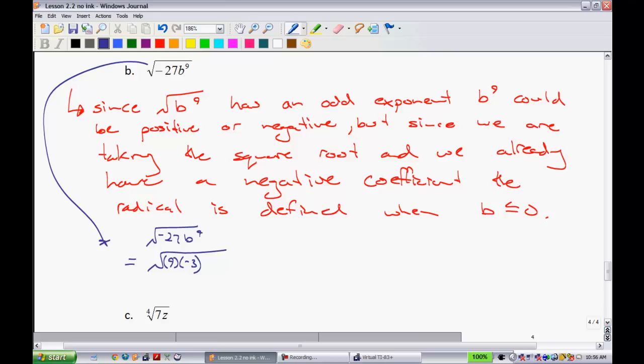since we are taking the square root of it, we need to make the b's have an even exponent. So I'm going to make this b to the 8th times b. The square root of 9 is 3. Nothing else you can take the square root of except b to the 8. If you take the square root of b to the 8, that's the same thing as saying b to the 8 all to the 1 half. Well, 8 times 1 half gives you b to the 4 outside here.